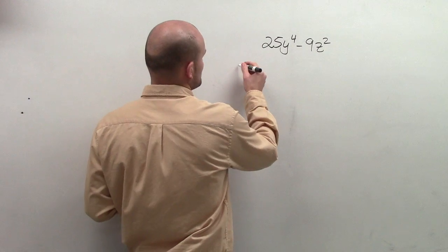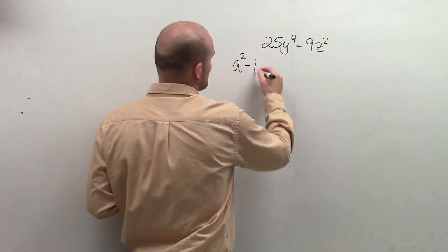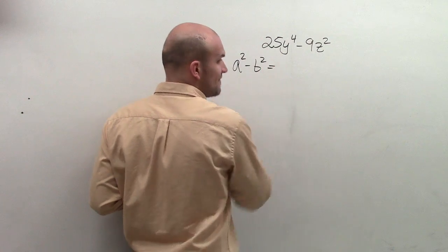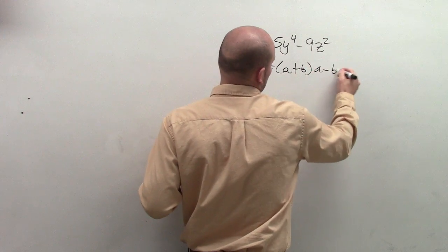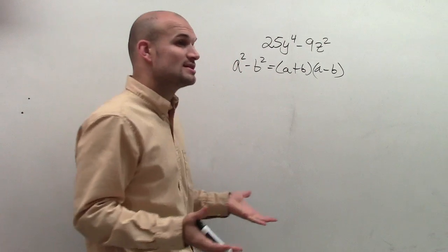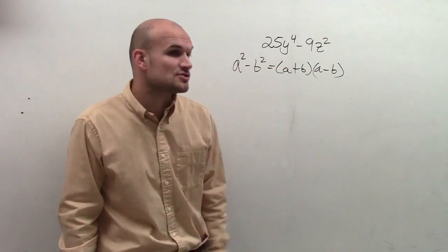So the definition of difference of two squares says when you have a squared minus b squared, the factored form of that is a plus b times a minus b. So that's really important because if you notice you have a square number minus another square number...